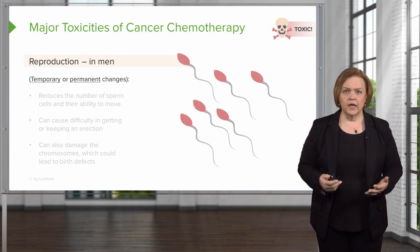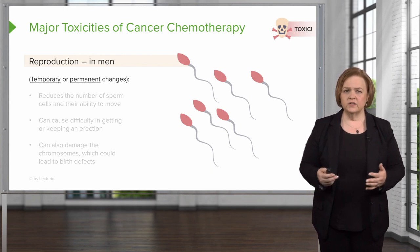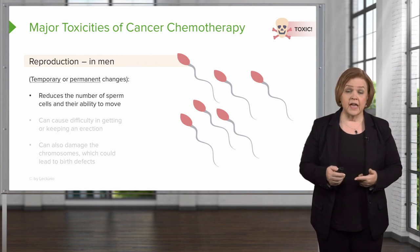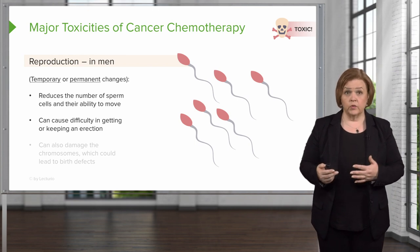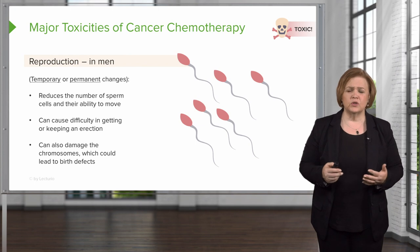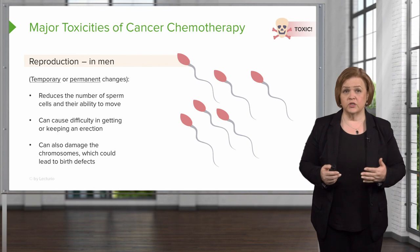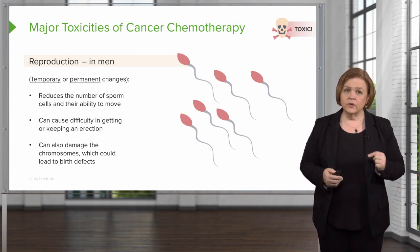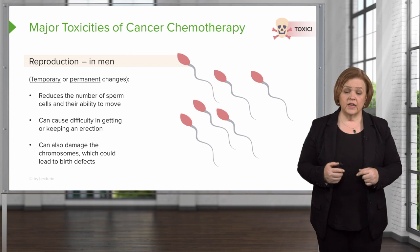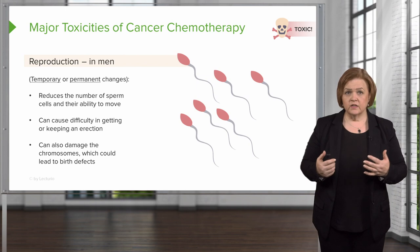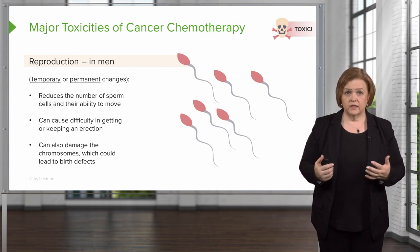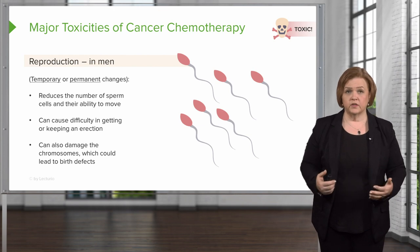Now we talk about reproduction. The impact is severe — it's both males and females, and could be temporary or permanent. It could reduce the number of sperm cells and their ability to move, cause difficulty with an erection, and it can also damage the chromosomes which could lead to birth defects. If the patient is still of reproductive age, they might consider harvesting eggs or sperm before they start chemotherapy.